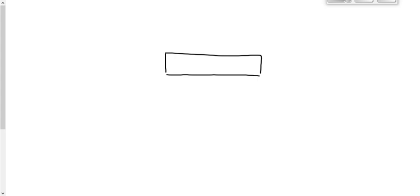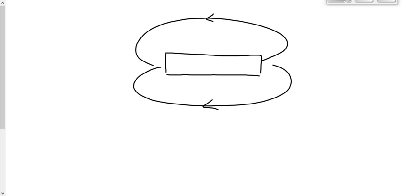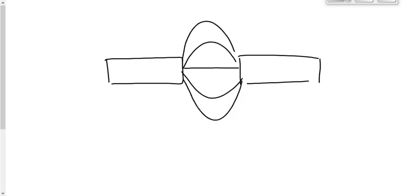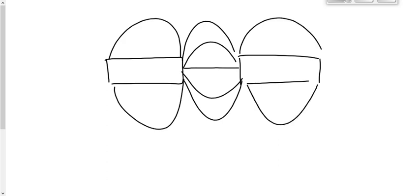Let's draw a slightly different diagram than we drew on Thursday. I'm not going to label the polarity — I'll just draw a simple diagram of the magnetic field and have you tell me which pole is which. What's north and what's south? The left side is south, because the field lines are going away from the north and toward the south.